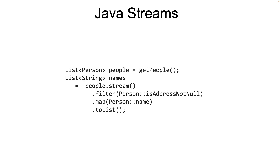Let's begin by looking at a typical example of Java streams. On the screen you see a simple example of a Java streams pipeline. Here, a list of person names are extracted from a list of person objects with valid addresses. The pipeline uses the familiar map and filter methods to do its job.